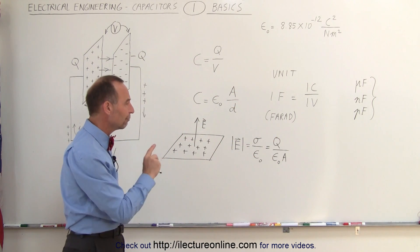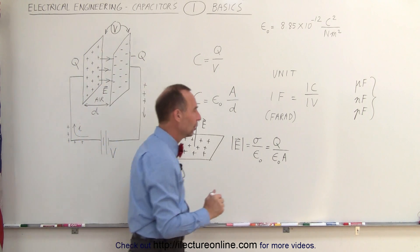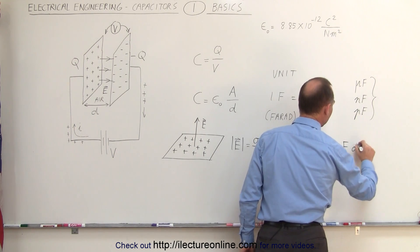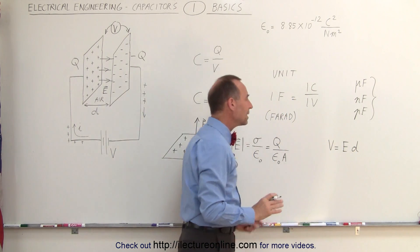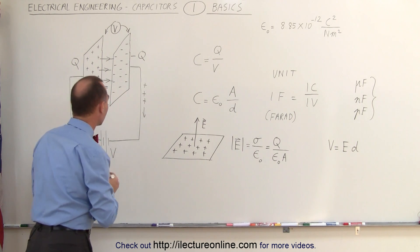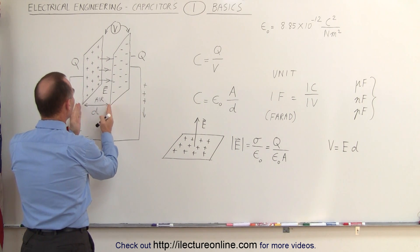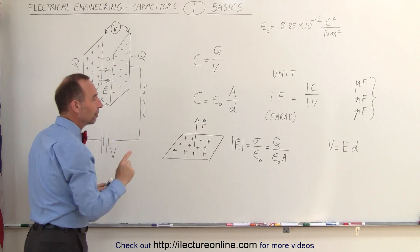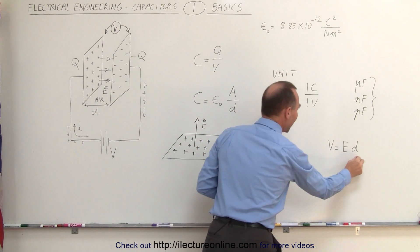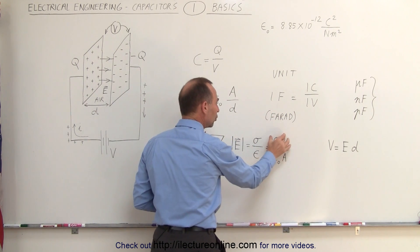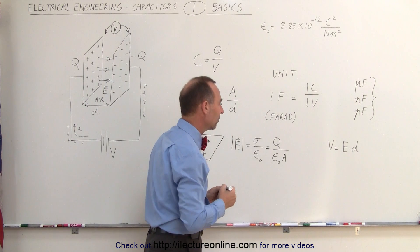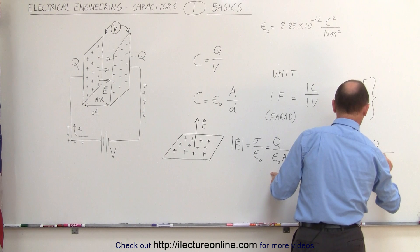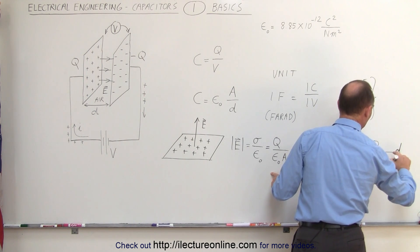There is also a relationship between voltage and electric field. The voltage is equal to the strength of the electric field times the distance between the two points for which we want the potential difference. So the potential difference V between the plates is simply E times D. Since the electric field equals Q divided by epsilon sub-naught times A, we can write V as Q divided by epsilon sub-naught times A times the distance D between the plates.